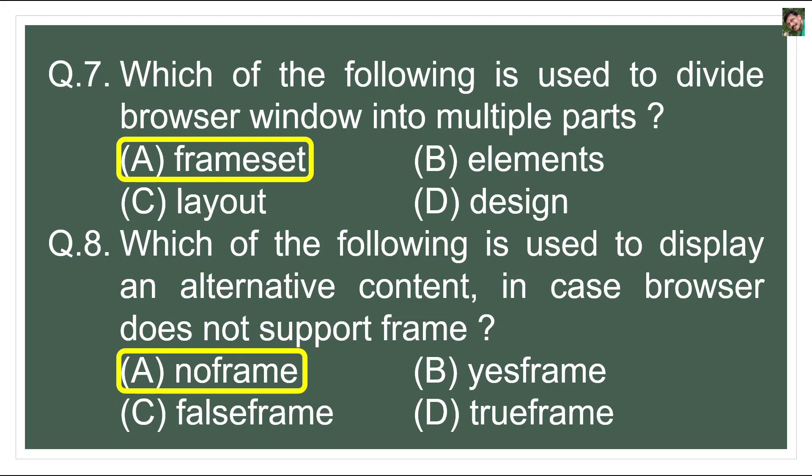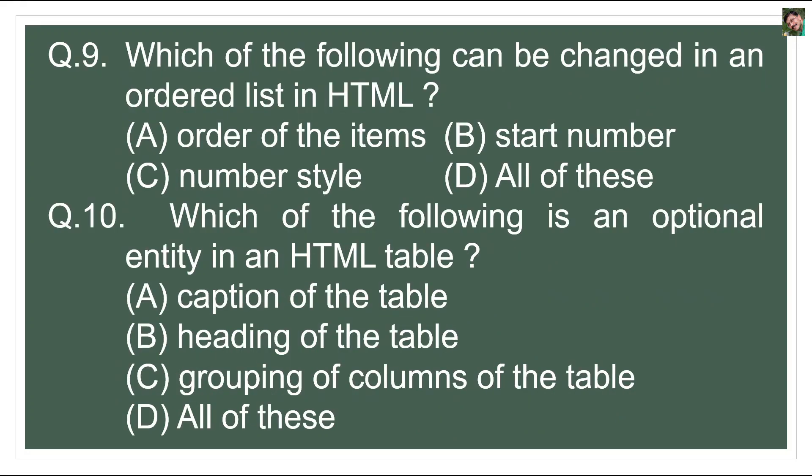Question 9: What can be changed in an ordered list in HTML? We can change the order of items, the start number, and the style of numbering. The type attribute changes the numbering style, the start attribute changes the starting number, and changing the list items changes the order.